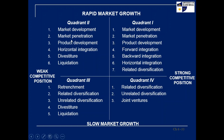For strong competitive position and rapid market growth — quadrant one — the strategies are market development, market penetration, product development, forward/backward/horizontal integration, and related diversification. For weak competitive position and rapid market growth, the strategies include market development, market penetration, product development, horizontal integration, divestiture, and liquidation.